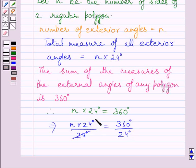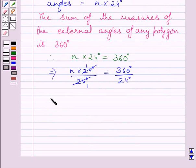Here 24 degrees will cancel this 24 degrees and we are left with N on left hand side is equal to, and 15 times 24 is equal to 360. So we get 15 here on right hand side.